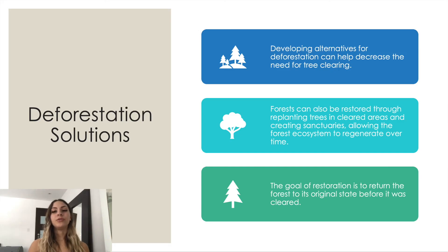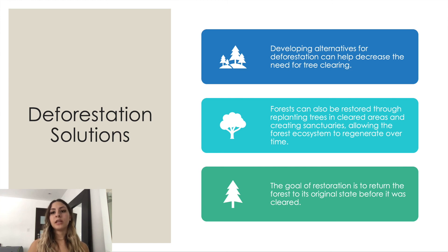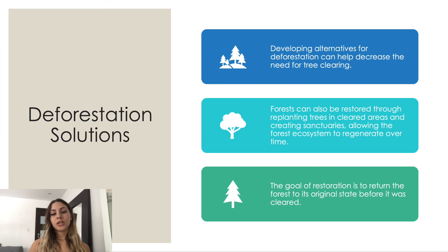Now let's talk about some solutions to deforestation. Developing alternatives for deforestation can help decrease the need for tree clearing. For example, the desire to expand the amount of land used for agriculture is an appealing reason to deforest an area, but if people adopted sustainable farming practices or employed new farming technologies and crops, the need for more land might be reduced. Forests can also be restored through replanting trees in cleared areas and creating sanctuaries, allowing the forest ecosystem to regenerate over time. The goal of restoration is to return the forest to its original state before it was cleared.